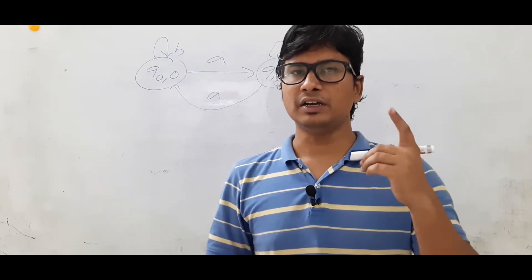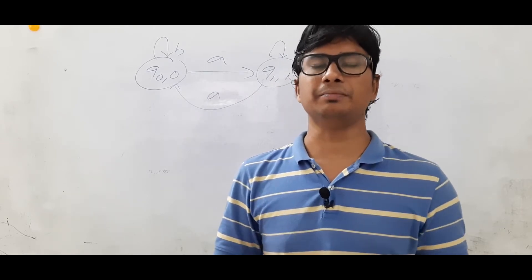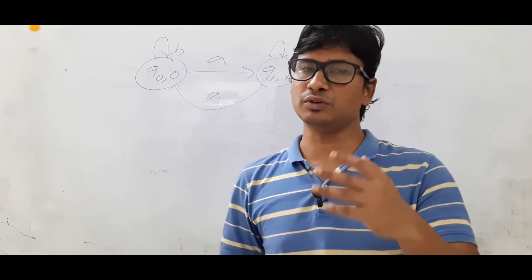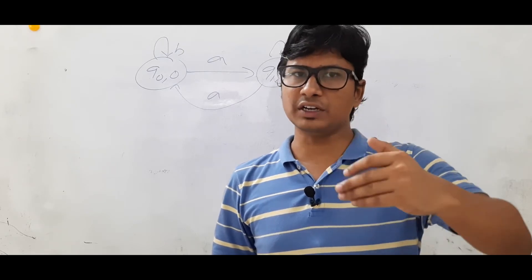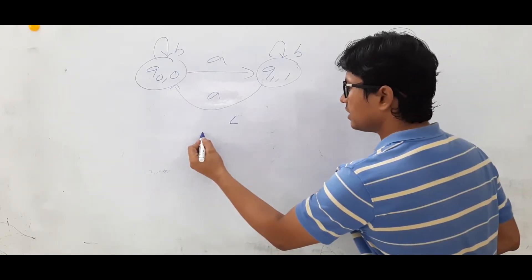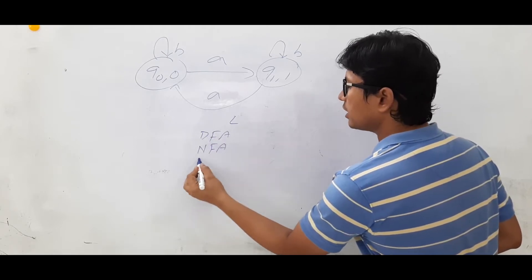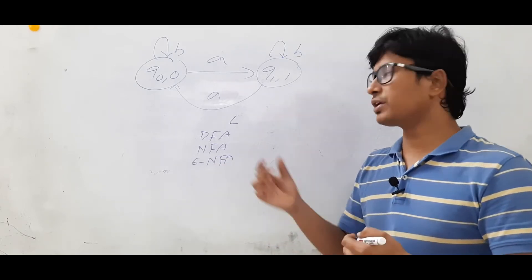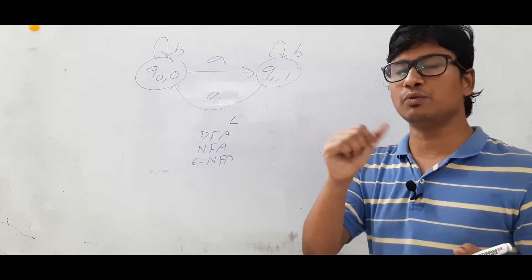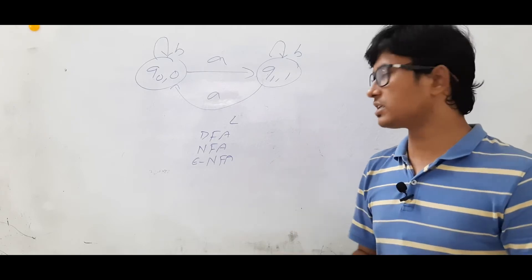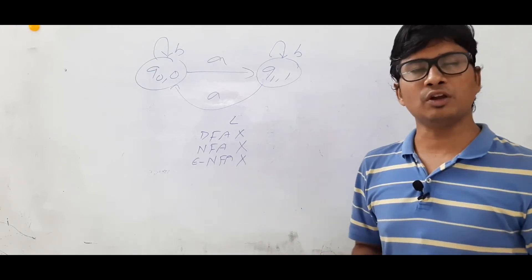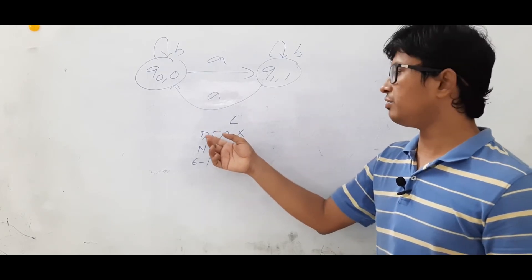If you remember, the capability of DFA, NFA, and Epsilon NFA is the same. Why? For a given language, if we can construct an Epsilon NFA, that Epsilon NFA we can convert into an NFA. So for a given language we have an NFA. For the same language we can convert an NFA to a DFA, so we have a DFA also. So if you have a language L and you can construct a DFA, you can also construct an NFA and an Epsilon NFA. For any language which is not a regular language, if you cannot construct a DFA, then you cannot construct an NFA and you cannot construct an Epsilon NFA. So I can say that the power or the capability of all these machines are the same.